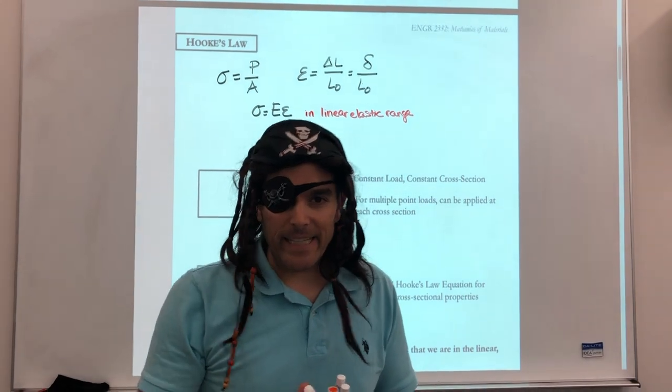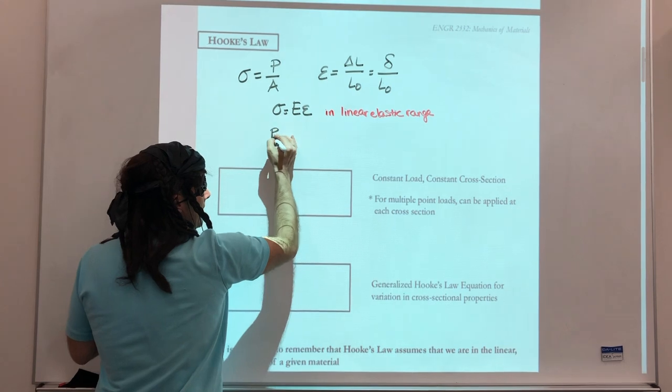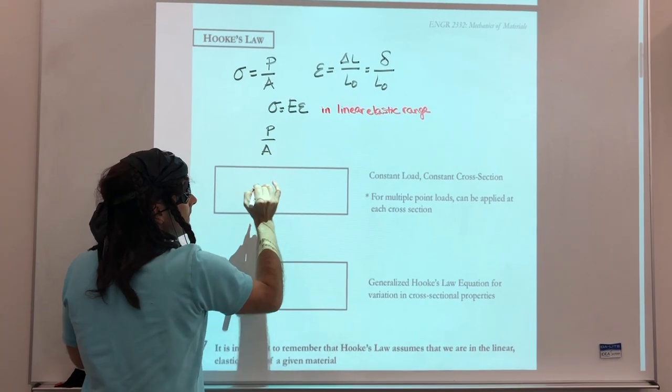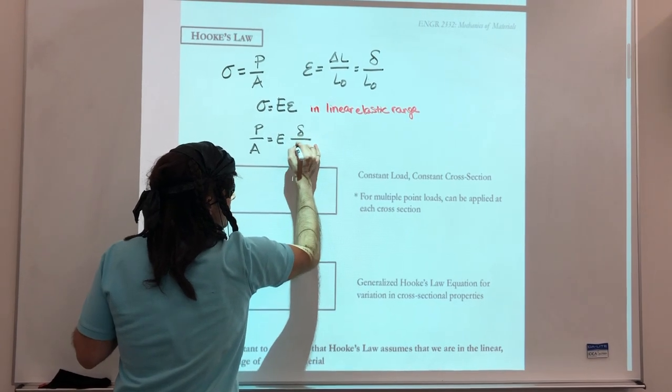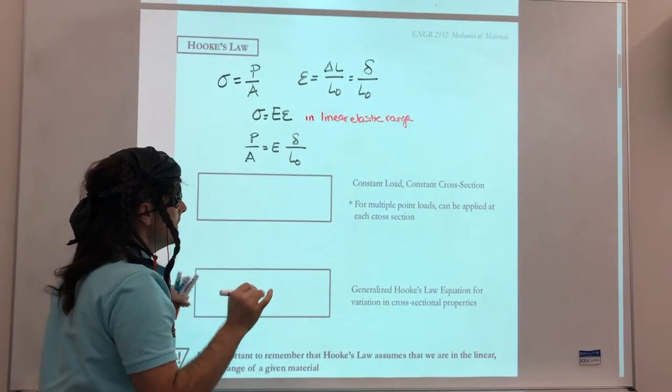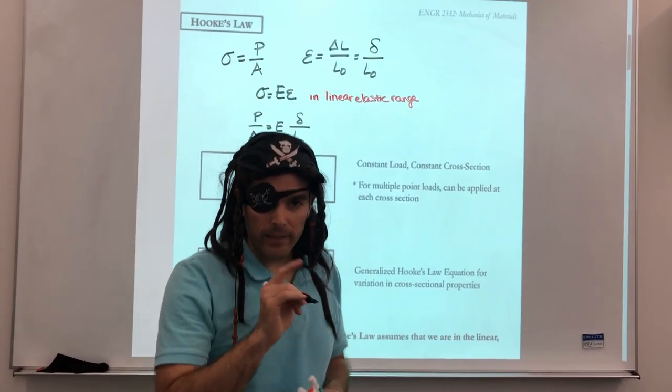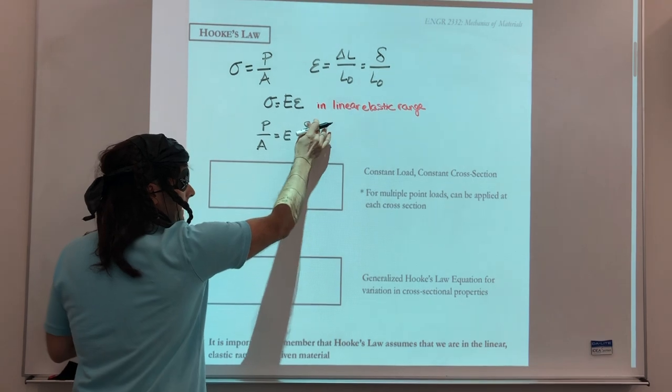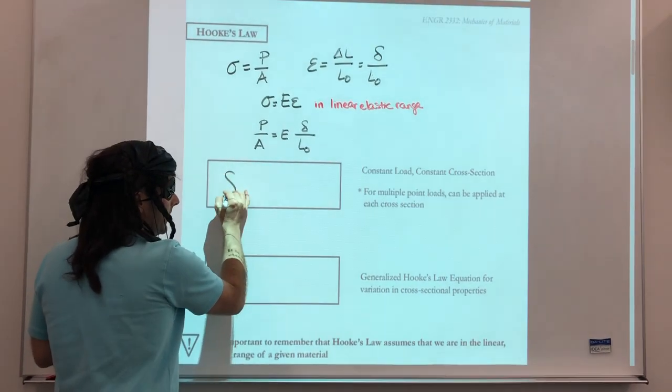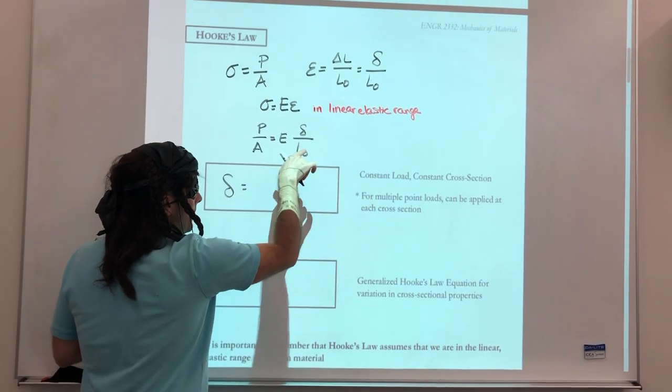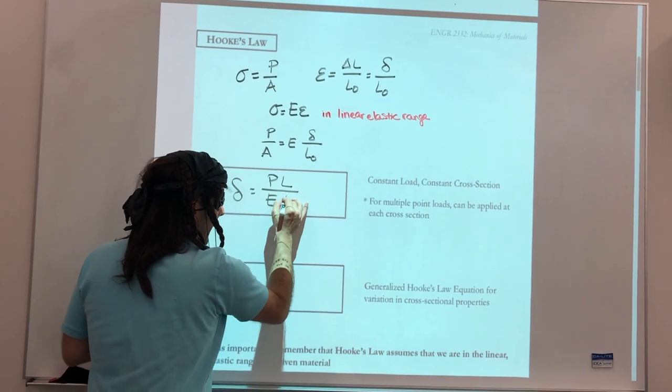If that's the case, I just want to plug in some of these variables. We'll substitute P over A for sigma. We'll substitute delta over L0 for strain. And then, I want to solve for delta. So ultimately, we are after the deflection delta, and delta is going to equal PL divided by EA.